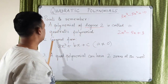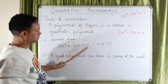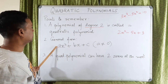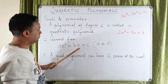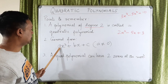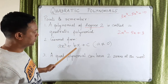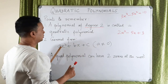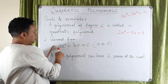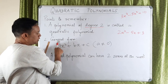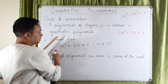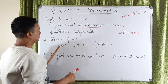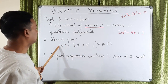In general, a quadratic polynomial will look like ax squared plus bx plus c. This is the general form where a, b, and c are any real numbers. A can be any number — 2, 3, root 2, whatever. B and c can be any number including zero. But a cannot be 0, because if a is 0, the whole term becomes 0 and the degree will no longer be 2 — it will become 1.